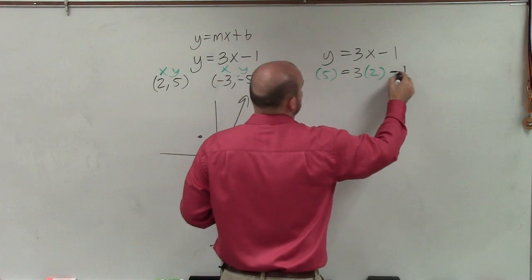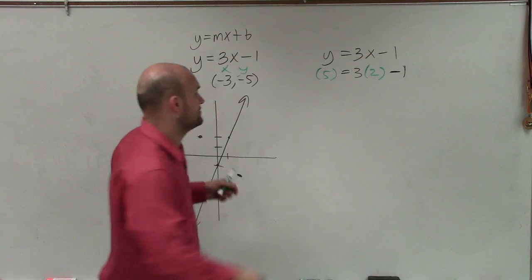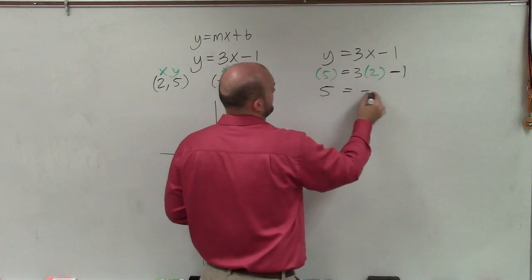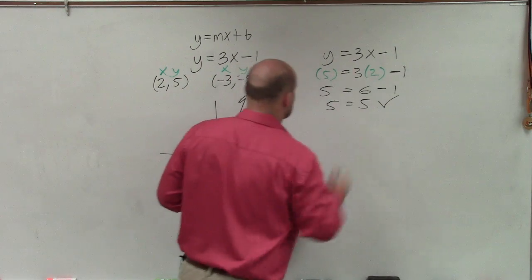Then I'm simply just going to evaluate and see if it's true or not. So 5 equals 3 times 2 is 6, 5 equals 5. That's true.